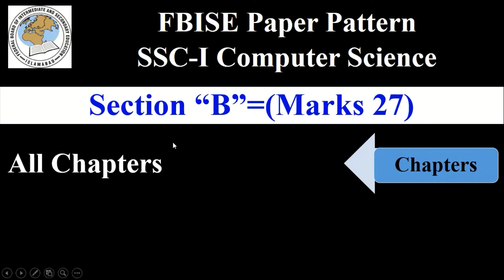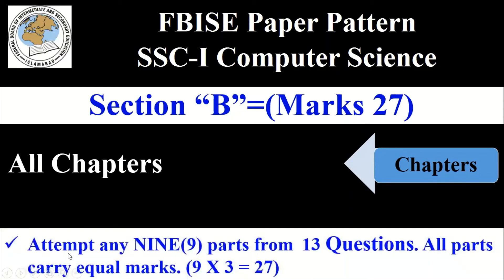To get 27 marks from Section B, you have to attempt any 9 questions or 9 parts from the 13 questions given. 13 questions are given in Section B and you have to attempt 9 questions. All parts carry equal marks — meaning all questions have equal marks.